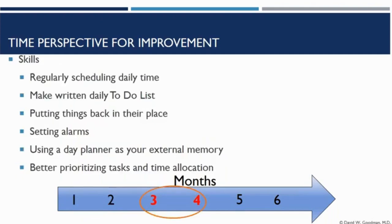Then we move on to skills. After the symptoms are reduced and you begin to realize what more you can do, this is when organizational skills can take root because you can remember to act consistently. You're regularly scheduling your daily time, writing to-do lists, putting things back where they belong, setting alarms to remind yourself during the day, and using a day planner consistently. So many ADHD individuals are told to start using a day planner — quite frankly, without medication, they don't stick to them. You're also better able to prioritize tasks. This kind of aggregates at around three or four months.